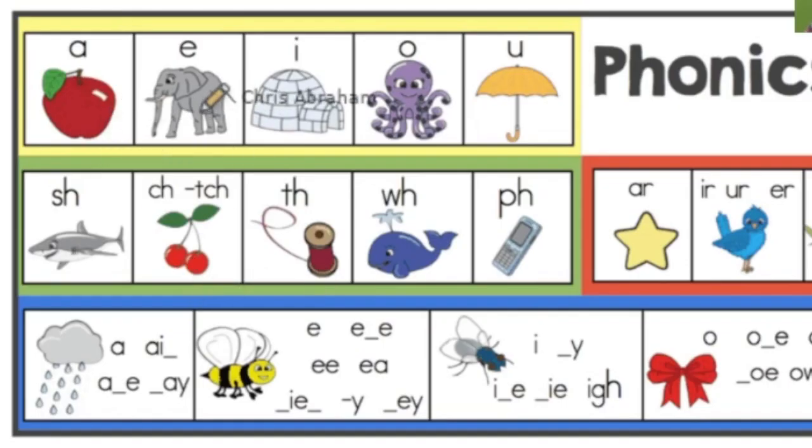Here we have apple, and elephant, and igloo, and octopus, and umbrella. Now you'll notice here, apple is short A, elephant is short E, igloo is short I. These are all short vowels. So here we have examples of all these phonemes that correspond with short vowels for A, E, I, O, U.